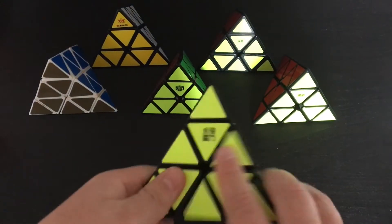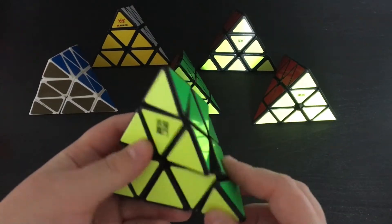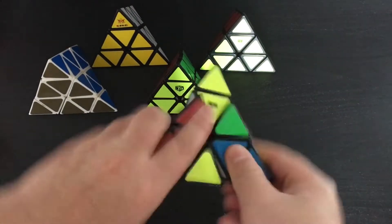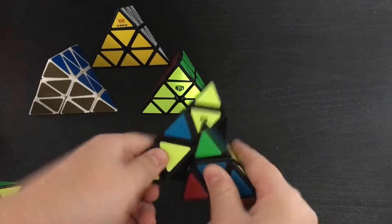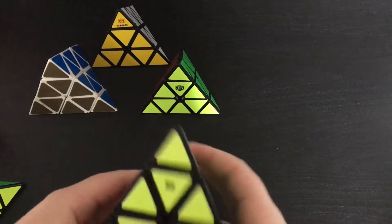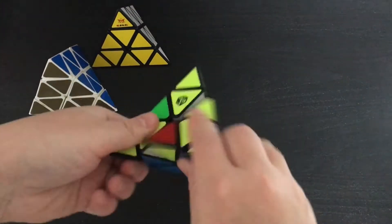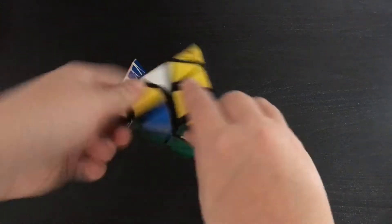So these are all my Pyraminx's. I have the YJ Yuan Pyraminx which is a cheaper Pyraminx, the Mo Yu Magnetic which is my backup main, the original Mo Yu Pyraminx which is also pretty good still, the Qi Bell Pyraminx which is my main Pyraminx, and two Method's Pyraminx's, the new one and the 1980's one with gold stickers.